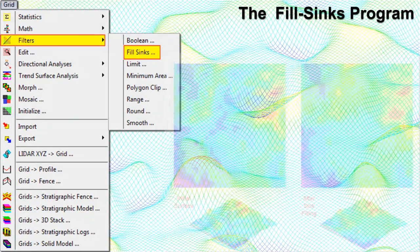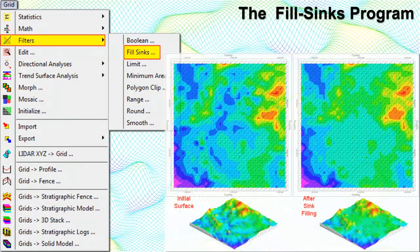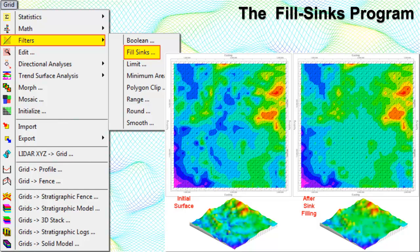The Fill Sinks program removes closed depressions from a grid model by essentially filling the holes. Applications include: eliminating closed depressions from a grid model prior to creating a simulated drainage network; cleaning up an oversampled grid model or other models with depressions caused by the sampling method, such as LiDAR, or the gridding algorithm, such as inverse distance; and creating a model that can be subtracted from the original to identify and estimate the volumes of depressions, such as sinkholes, excavations, and subsidence.